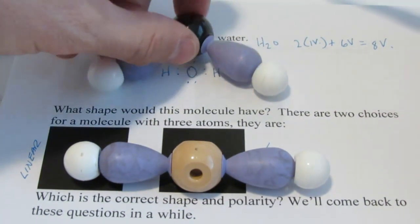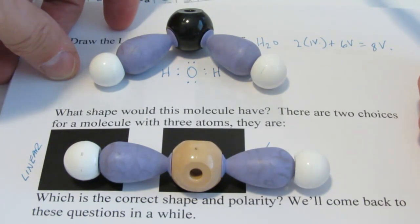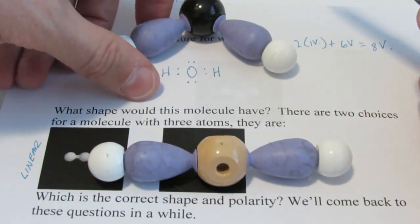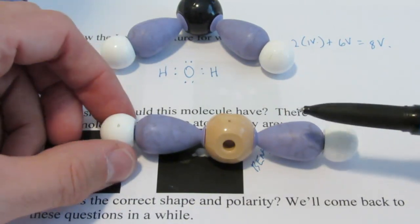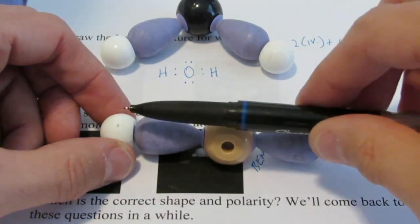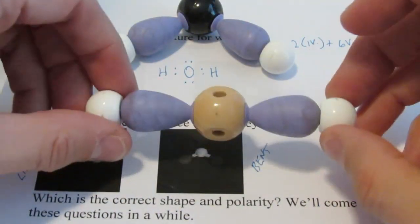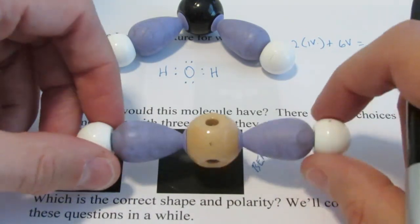Dipoles are vector quantities, which means they have both magnitude and direction. And so in the case of a linear arrangement, we might have a dipole going in this direction, and we would have a dipole going in this direction. If it's linear, they'd end up canceling each other out, and there would be no net dipole. So it would be nonpolar.